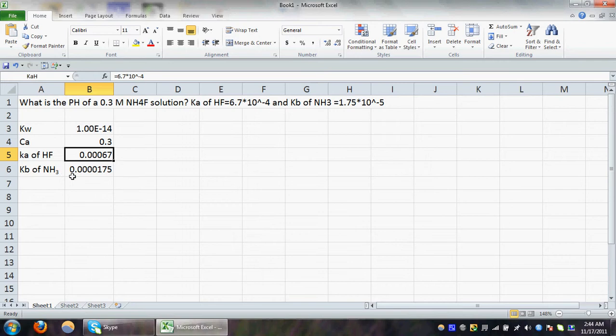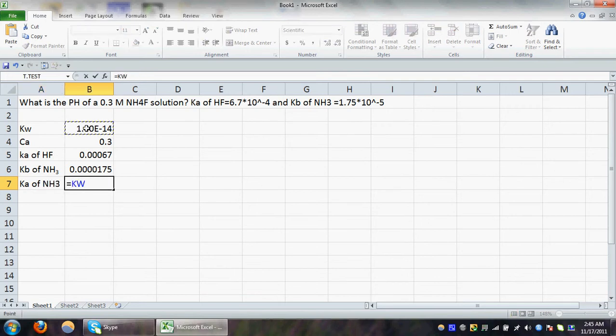Here I am given the Kb of ammonia, but we will always deal with the Ka value, so we have to change the Kb of ammonia to the Ka of NH3, which is simply Kw divided by our Kb of NH3. Hit enter. Once we got the value for Ka of NH3, we need to fix it. I will go at the top, I will type KAN, hit enter.